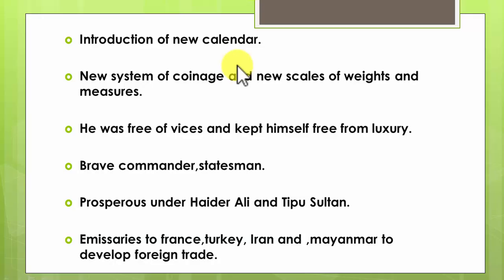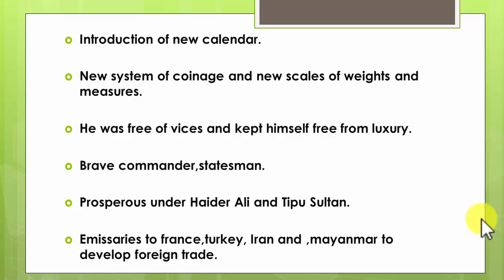In 1796, Tipu made an effort to build a modern navy and established dockyards at Mangalore, Molitabad, and Wajidabad. He was an innovator who desired to change with the times — symbolized by his introduction of a new calendar, new system of coinage, and new scales of weights and measures. He himself was free from bad habits and luxury. The British observed that Mysore under Tipu was well cultivated, populous with industrious inhabitants, and had a very stable economy, as he gave importance to modern trade and industry.